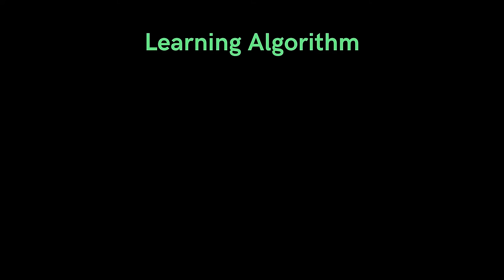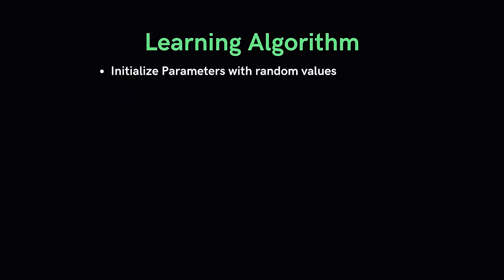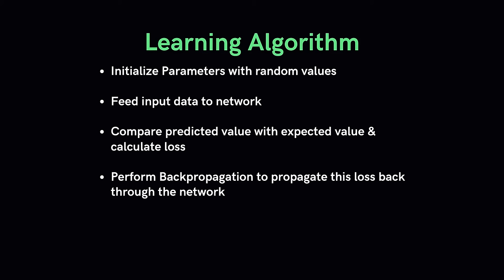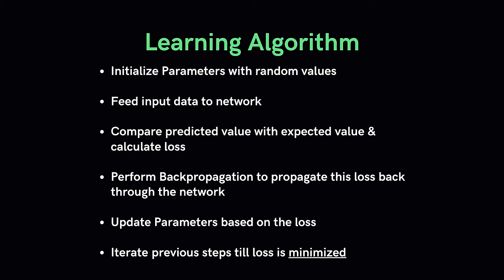This learning algorithm can be summarized as follows: First, initialize the network with random weights and biases. Take a set of inputs and pass them through the network. Compare predictions with expected labels and calculate the loss using a loss function. Perform backpropagation to propagate this loss to each weight and bias. Use this information to update weights and biases with the gradient descent algorithm to reduce total loss and obtain a better model. Continue iterating until we have a good enough model.